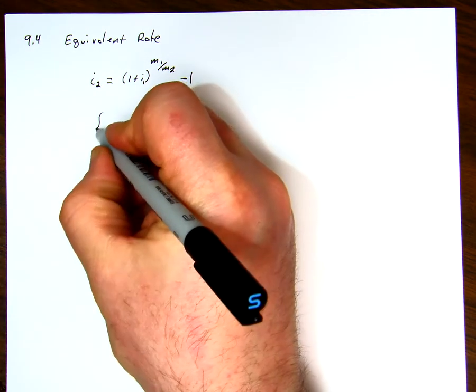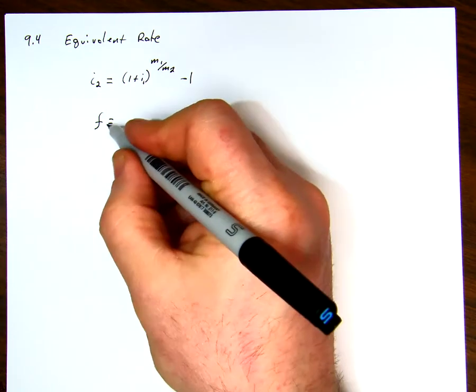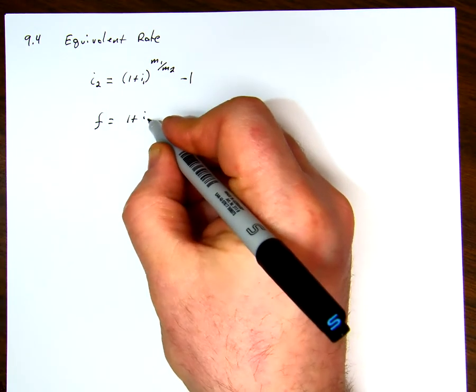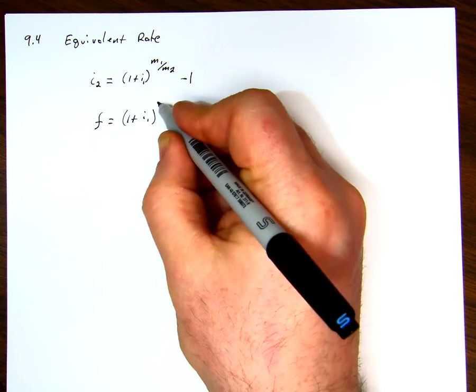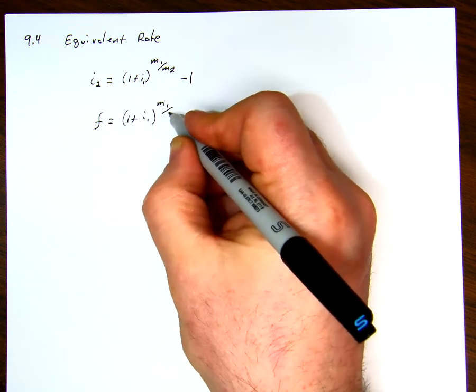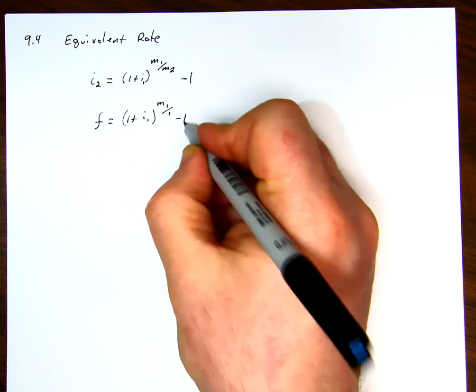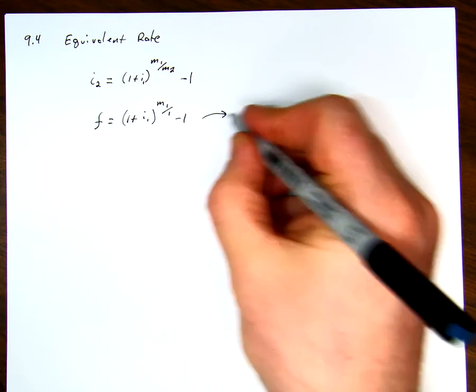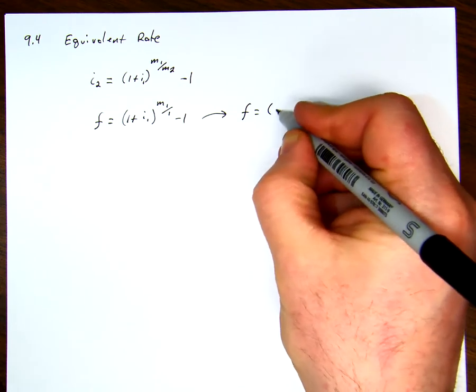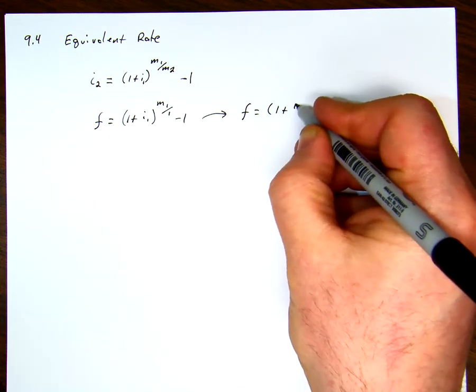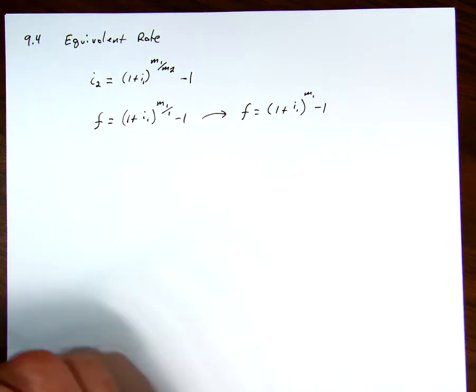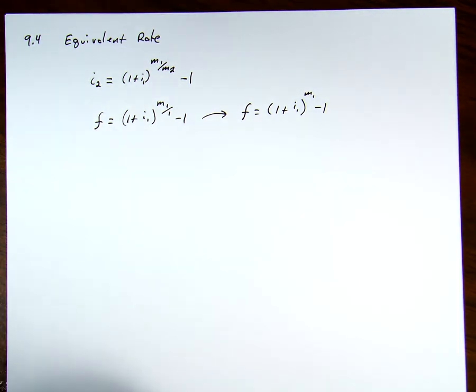So looking at the special case of the effective interest rate, we said f, this was equal to, and this was annual, so this is 1 plus i1 to the m1 over 1 minus 1. And so that just resulted in f is equal to 1 plus i1 to the m1 minus 1, and we didn't worry about the 1's at the time.